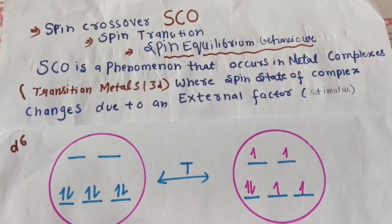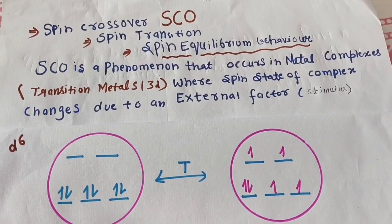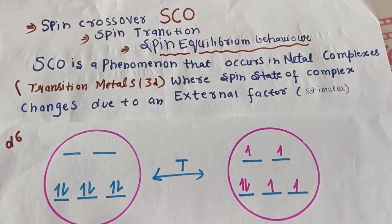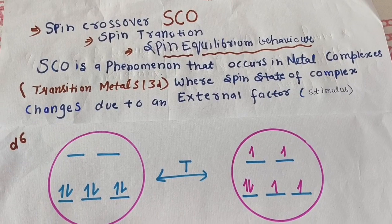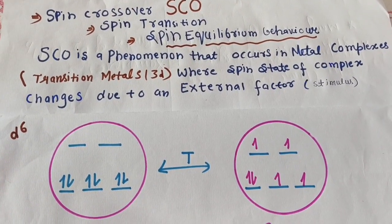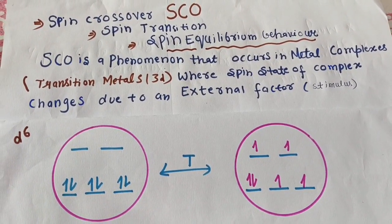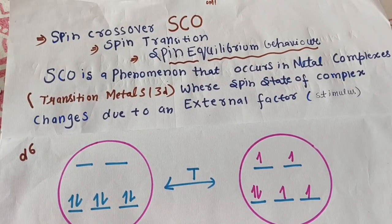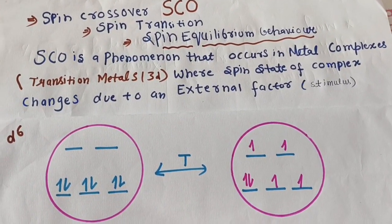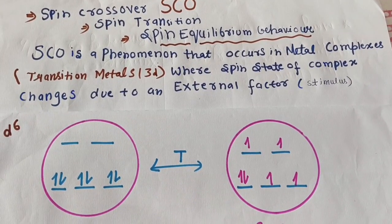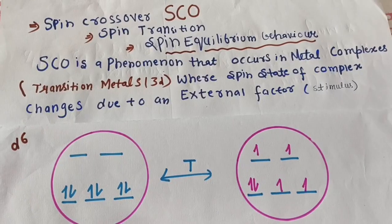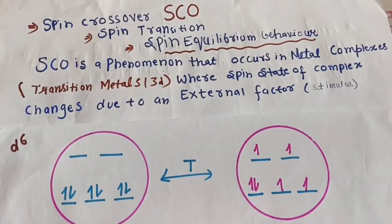This phenomenon generally occurs in transition metal complexes of the 3d series — scandium, titanium, vanadium, and so on — where the spin state of the complex changes due to external factors like temperature, pressure, or radiation.